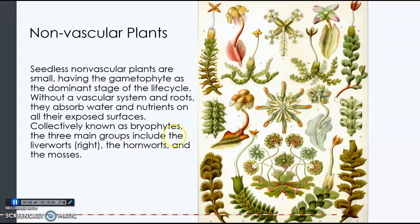Now we'll talk about the seedless non-vascular plants. Their gametophyte generation is the dominant stage — you always have to know which is the dominant stage of the life cycle. The gametophyte is the dominant stage. They are very short and are collectively known as bryophytes.